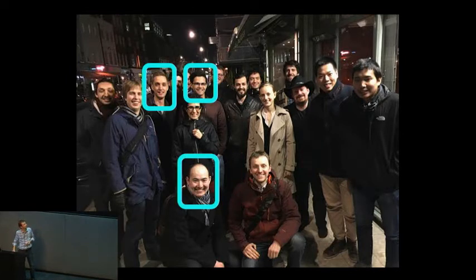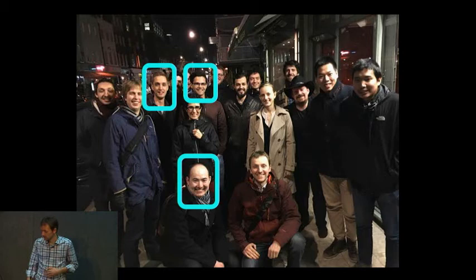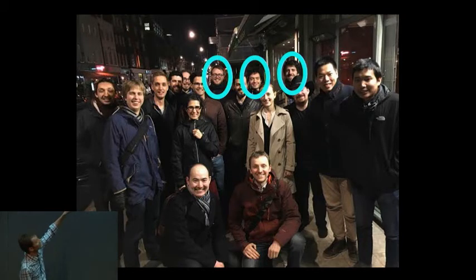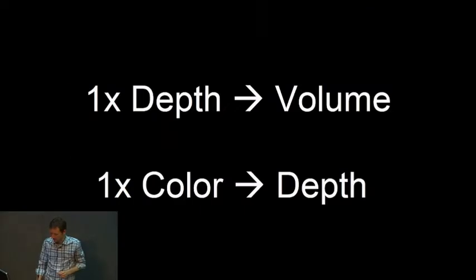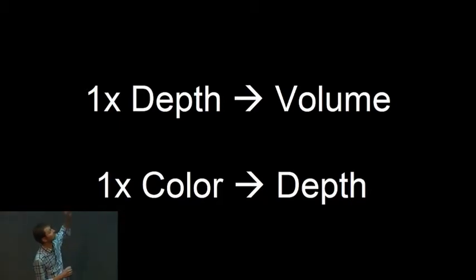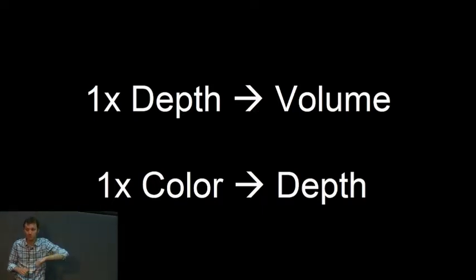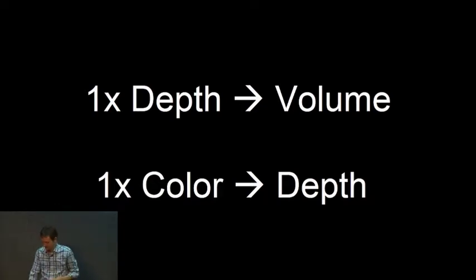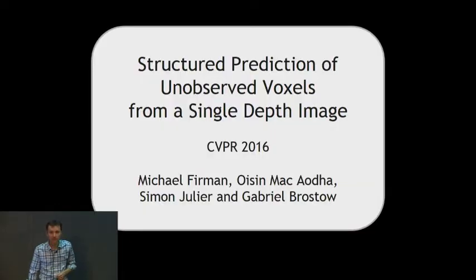Besides Stefan's work, which I'm not talking about today, I will focus on work by Michael Furman and Clément Goddard, both supported by Oshin McKay. For the two projects I'm going to talk about, we're converting a single image into something quite cool. In the first instance, it's converting a single depth image, like from a Kinect, into a volume. Then we'll convert a single color image into a depth. These two pieces aren't ready to be combined yet.